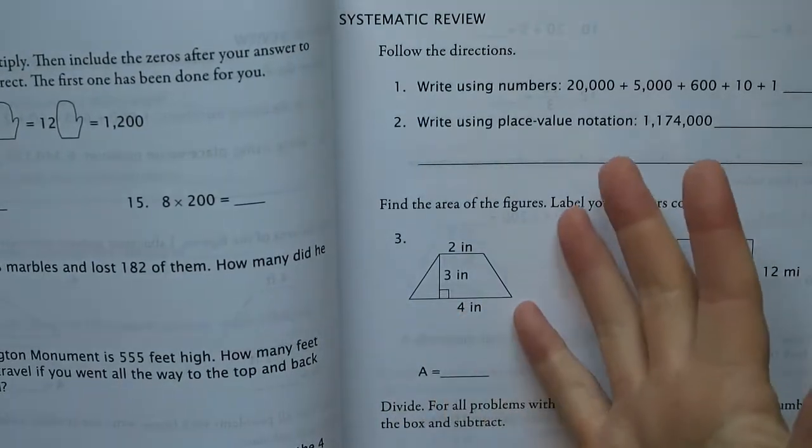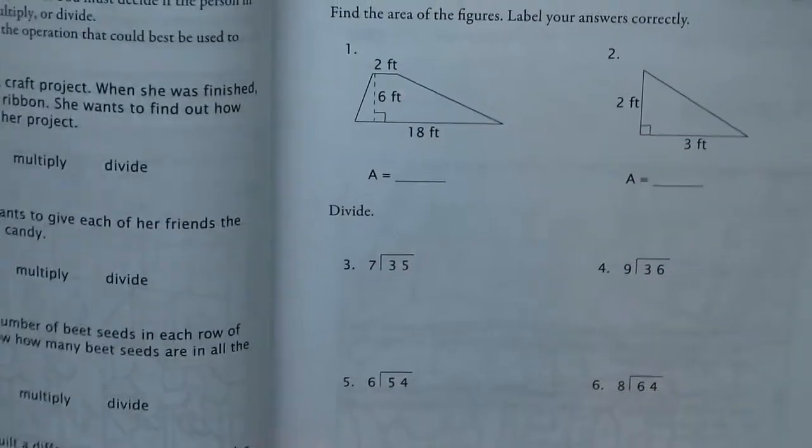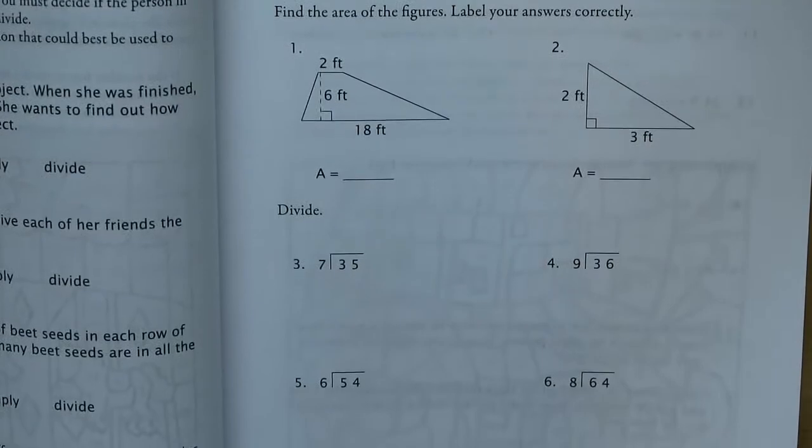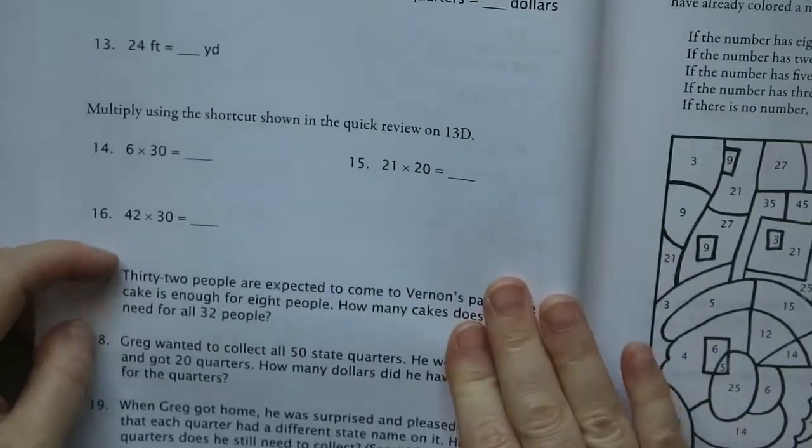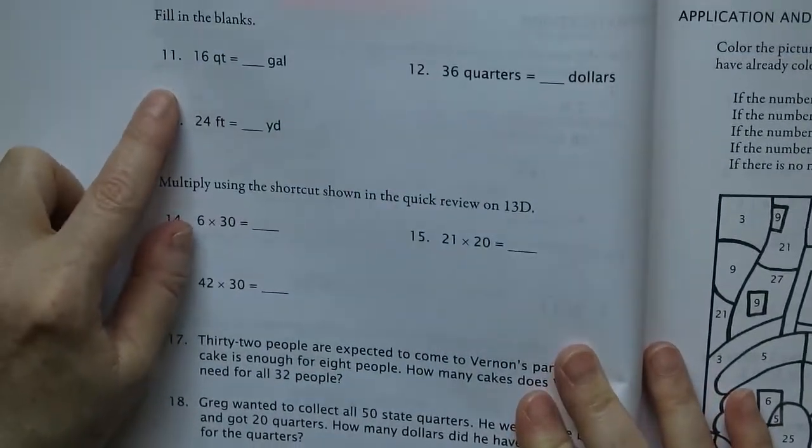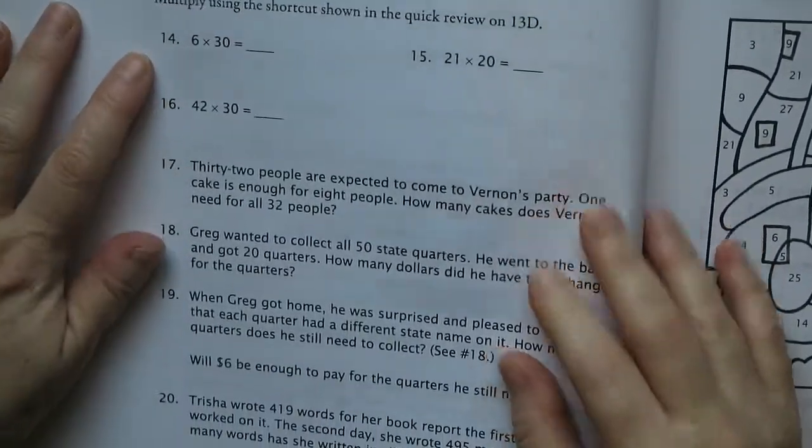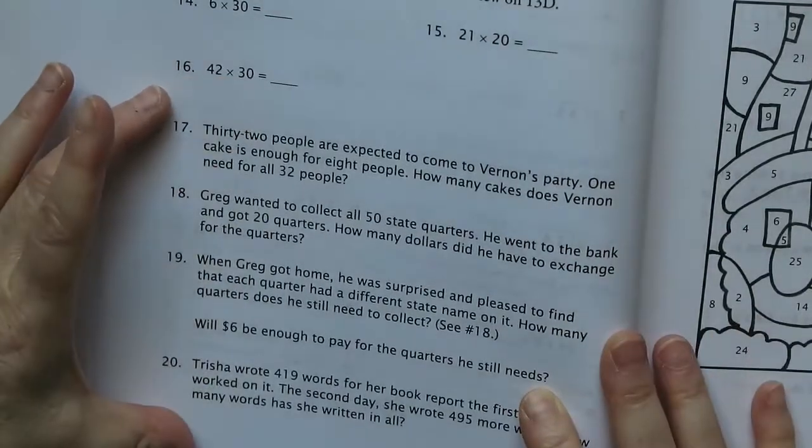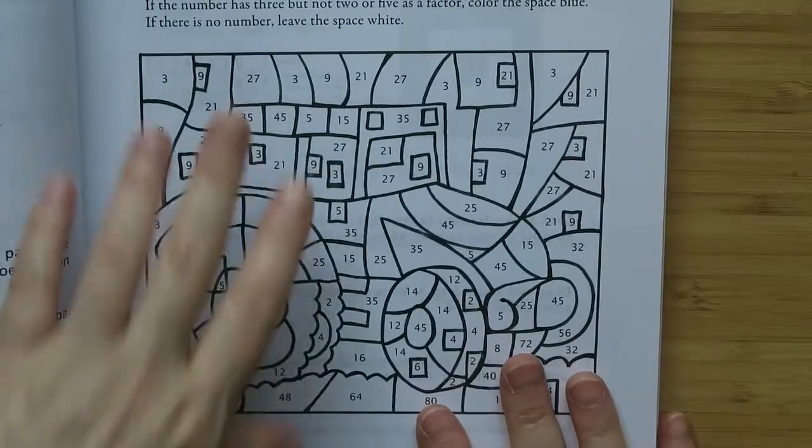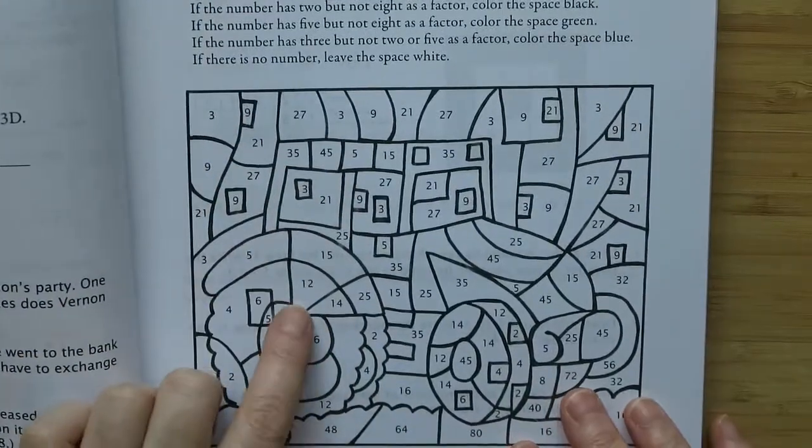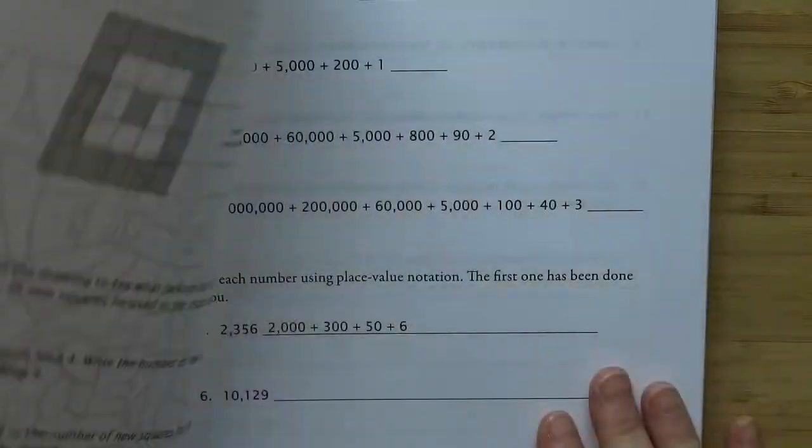This is the chapter 13 review page that comes right before the test. There's usually 20 problems reviewing capacity, multiplication, then the problem solving becomes a little more challenging.